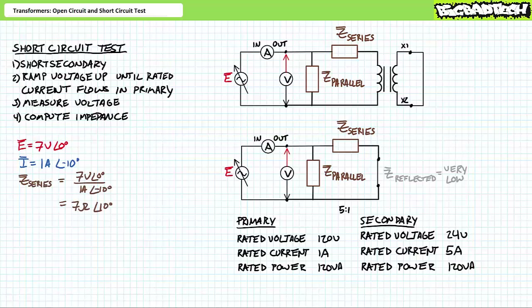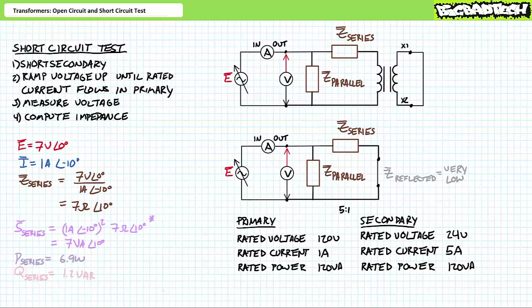An application of Ohm's law demonstrates the series impedance inside the transformer equivalent circuit is 7 ohms at an angle of 10 degrees. Which portion accounts for primary copper losses, which for secondary copper losses, which for inductive effects? We don't know and we don't care — all of these factors and more are rolled up into one quantifiable property for the transformer equivalent circuit.